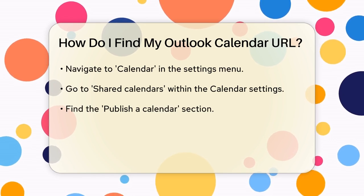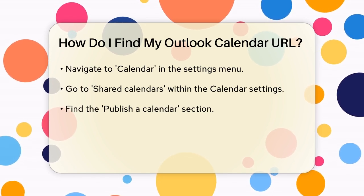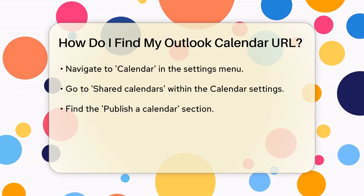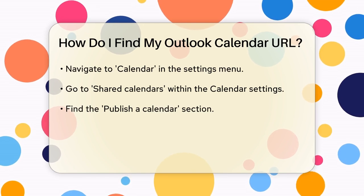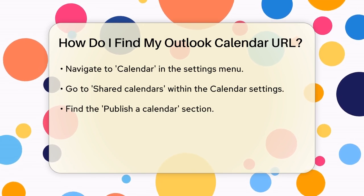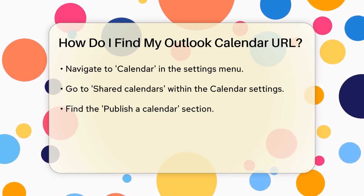On the left side of the Settings page, select Calendar and then navigate to Shared Calendars. Here, you'll find a section labeled Publish a Calendar.